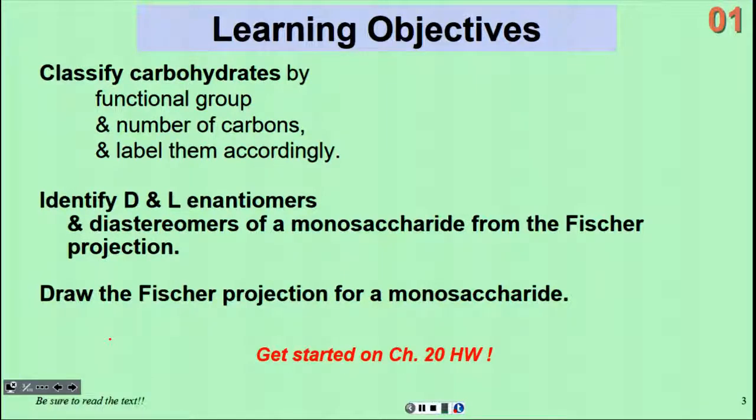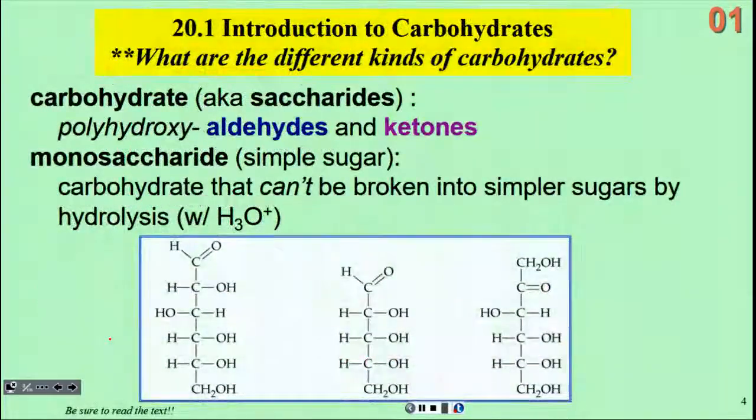What are the different kinds of carbohydrates? Well, another name for them is saccharides. You may have heard of polysaccharides, monosaccharides, and disaccharides. Polyhydroxy aldehydes and ketones have exactly what it sounds like - aldehyde or ketone groups and a lot of OH groups.